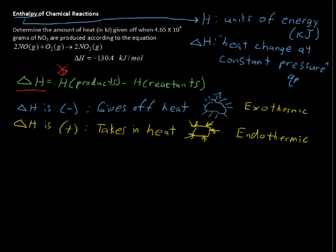Okay, to the problem. Well, it turns out this little problem isn't so tough. So it's nice that we had some time to talk about enthalpy. Determine the amount of heat in kilojoules given off when 4.65 times 10 to the fourth grams of NO2 are produced according to the equation 2NO plus O2 yields 2NO2, and the change in enthalpy is negative 130.4 kilojoules per mole.